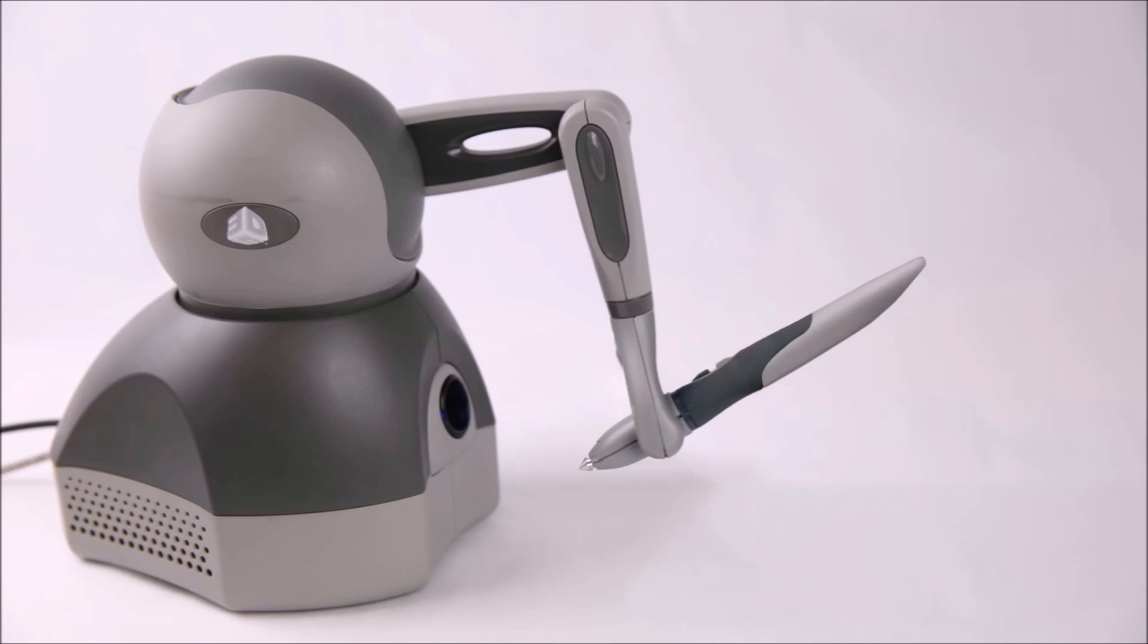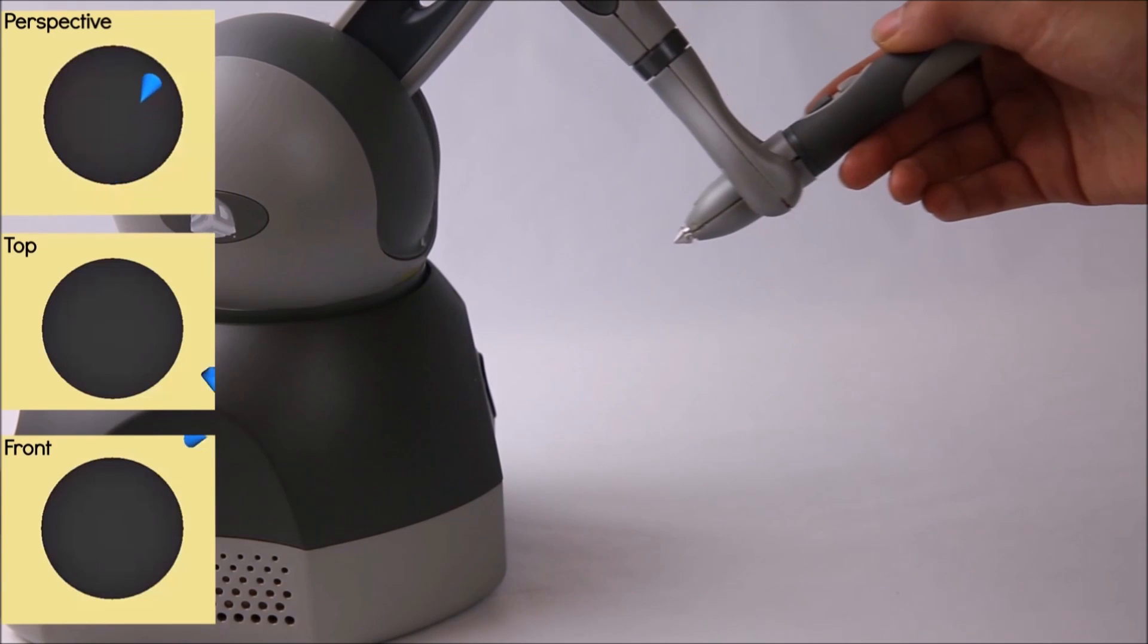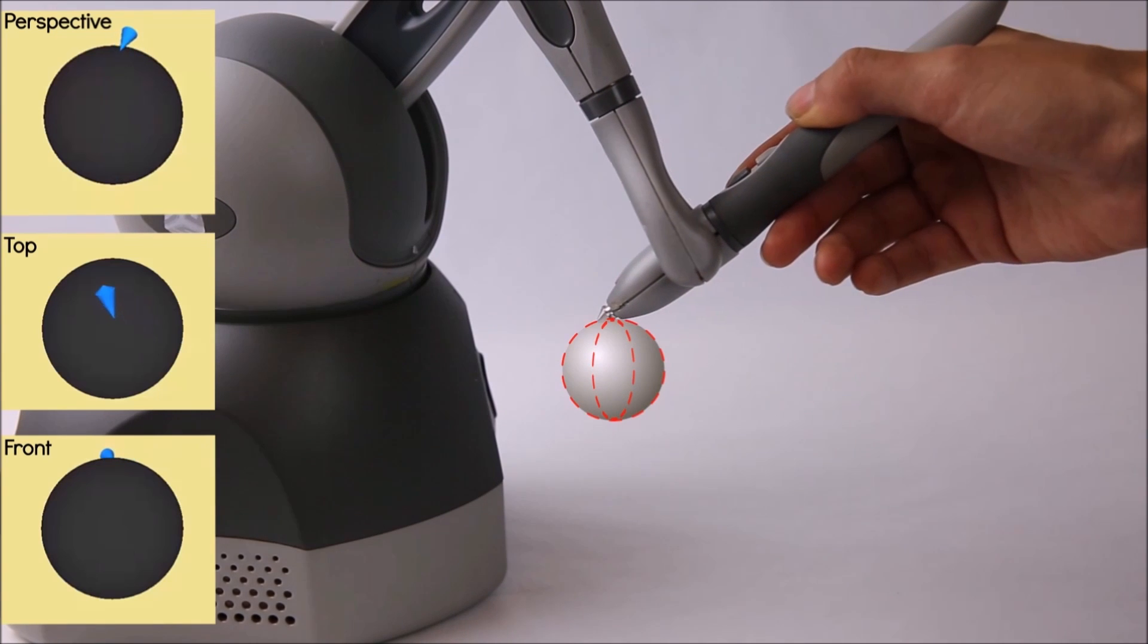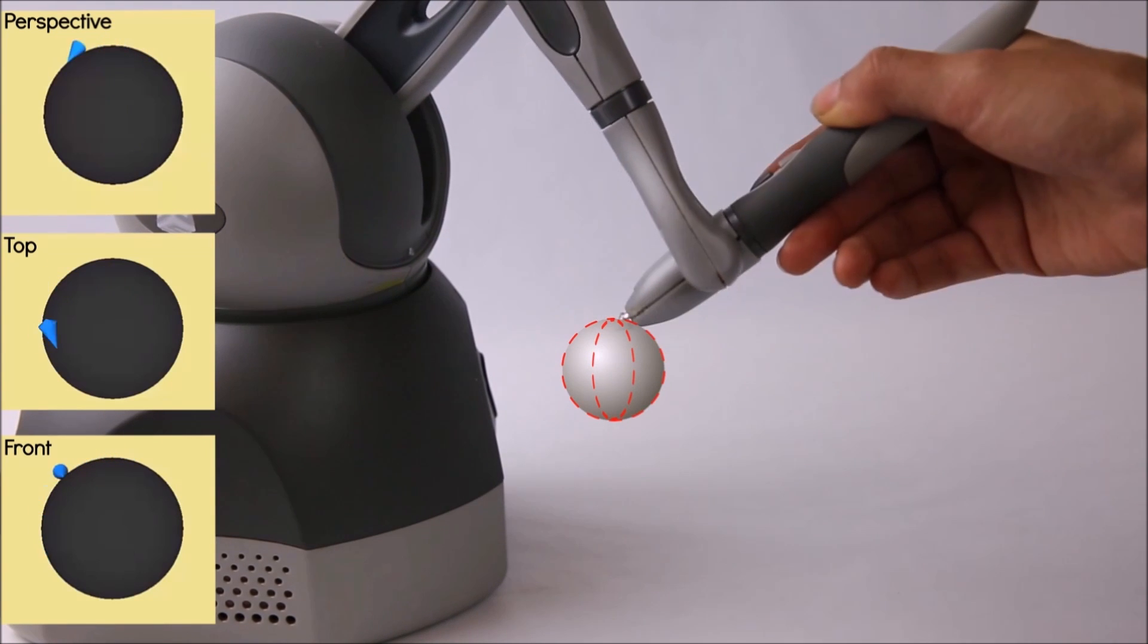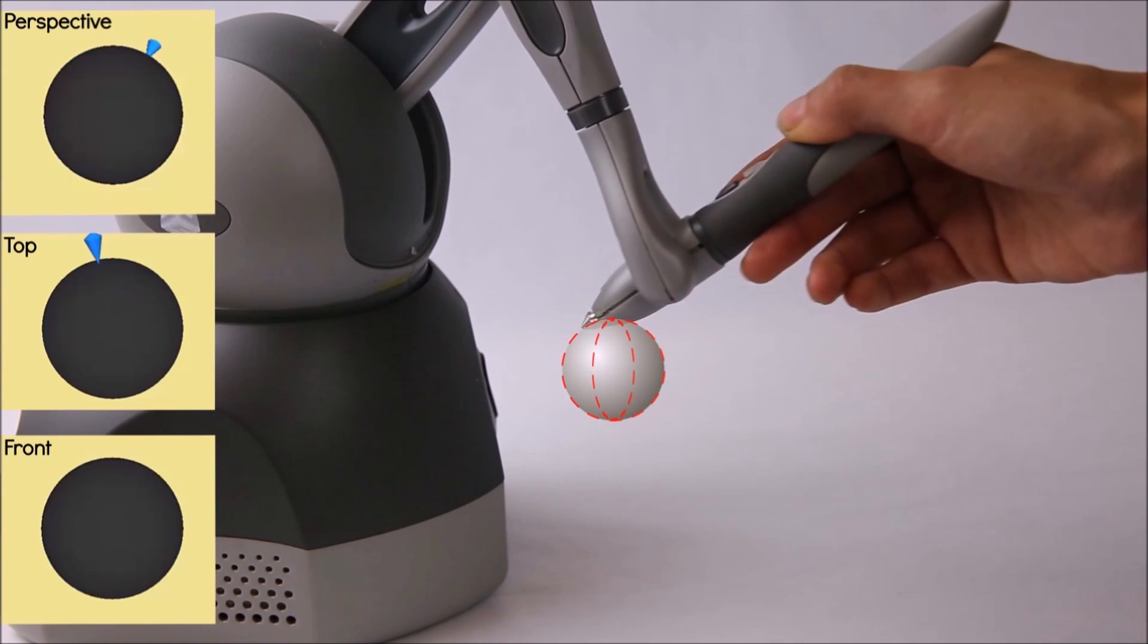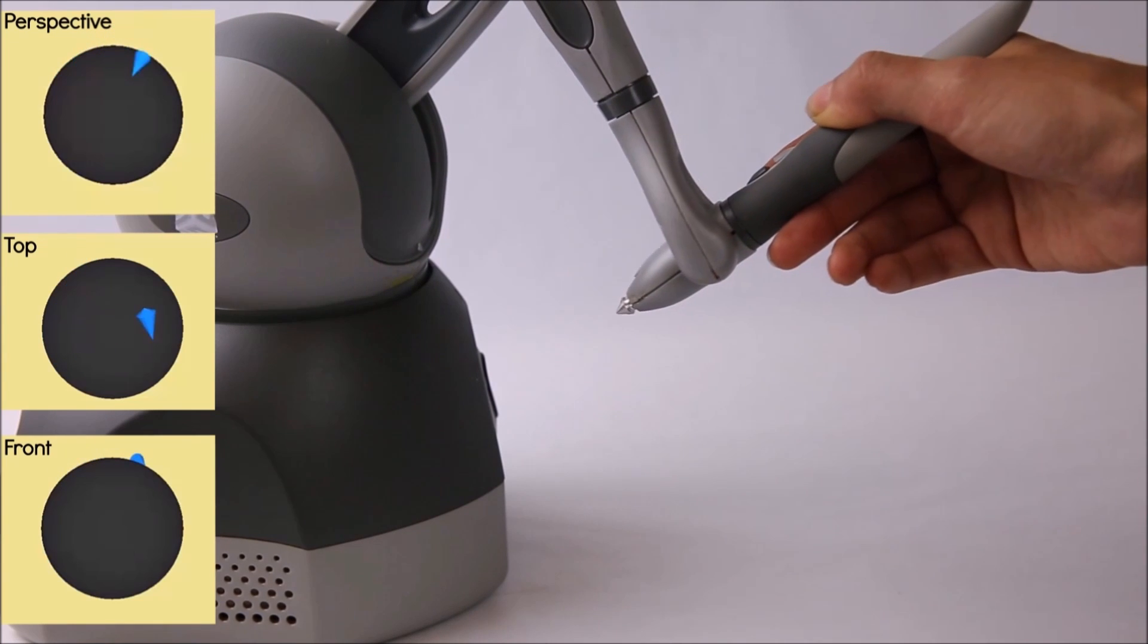This is a haptic feedback device called the Geomagic Touch. Its robotic arm pushes and pulls the tip of the pen in your hand, which produces a sensation of touching digital models as though you were touching a real object with a pen.